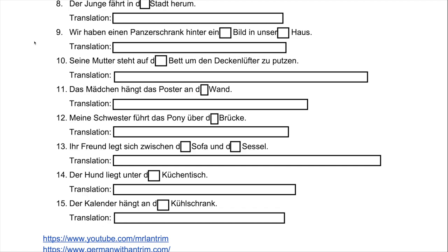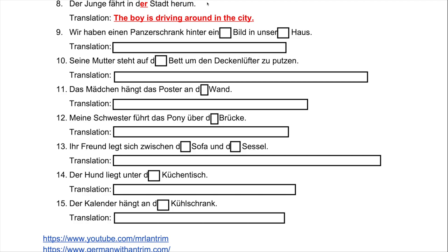Number eight: 'Der Junge fährt in ___ Stadt herum.' Remember, if you are driving inside the city and driving around in it, you use 'herum' at the end of the sentence. That's exactly what's happening here, which means the answer should be dative. He is driving around within the city: 'in der Stadt herum.'